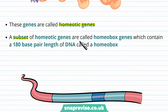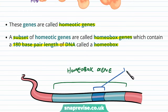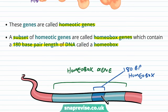There's a certain subset of homeotic genes called homeobox genes, and these contain a 180 base pair length of DNA called a homeobox. So homeotic genes organize the shape of organisms, and one type of homeotic gene is called a homeobox gene. Within the homeobox gene, there is a specific region 180 nucleotides in length called the homeobox. So the homeobox gene contains a homeobox within it.